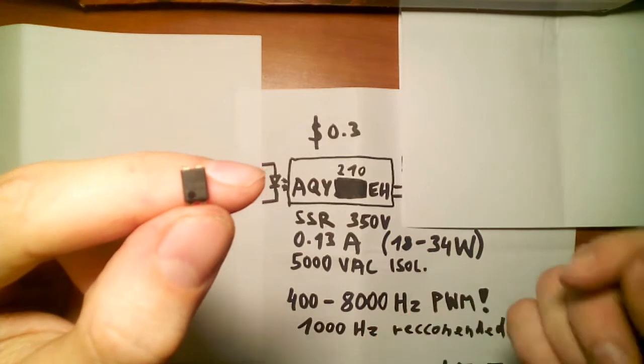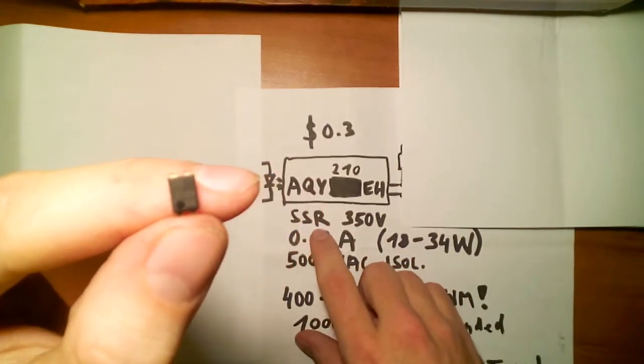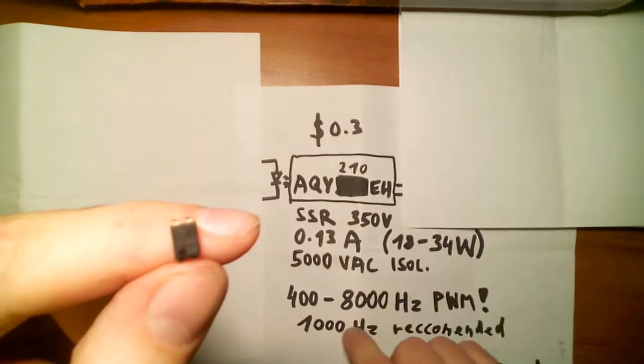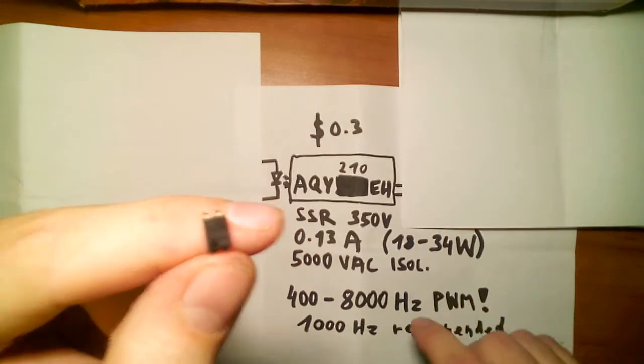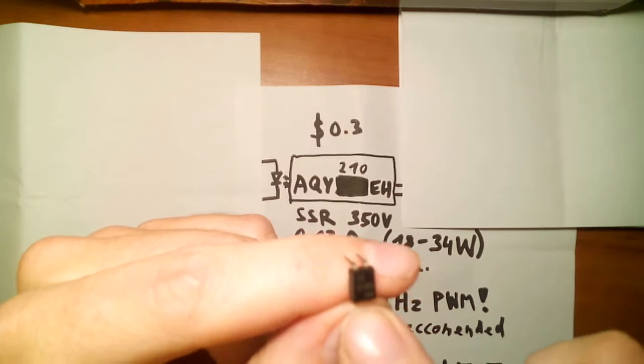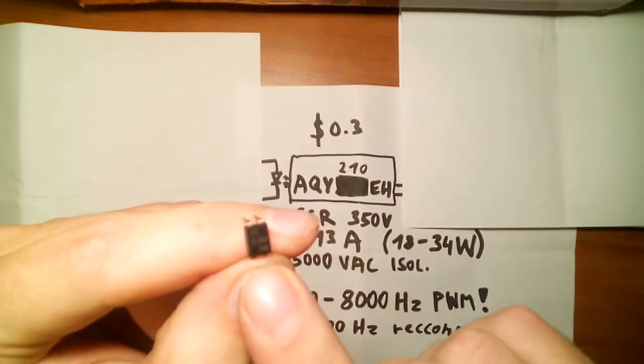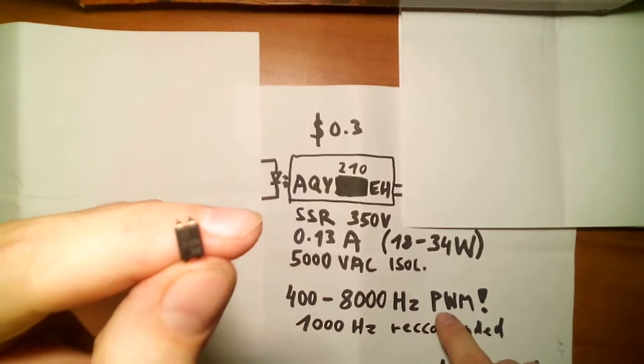It's interesting because it's in fact a solid state relay, and it's not a classical solid state relay based on triac. Instead it has metal oxide transistors inside, and because of that it can be used to PWM.